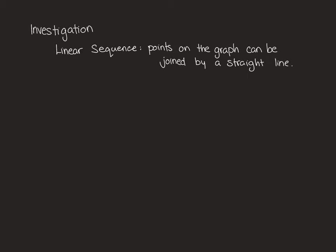After question 4 you are going to have a short investigation. This investigation is going to introduce some new vocabulary and this vocabulary is linear sequence. A linear sequence is when you plot points on a graph and they can be joined by a straight line. This has to be like a ruler line, not that it goes up and then down but one straight line.